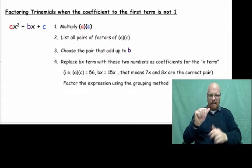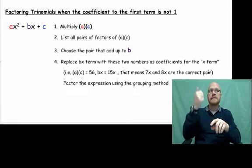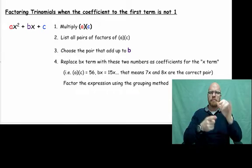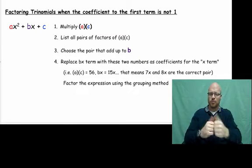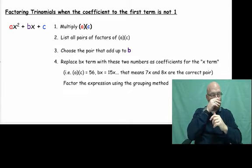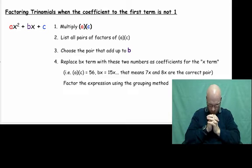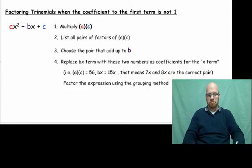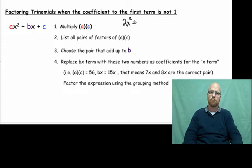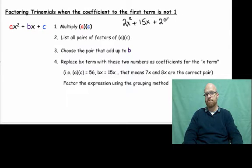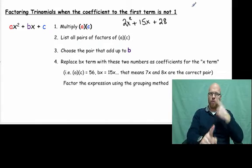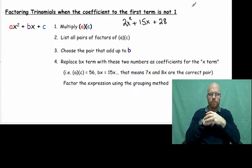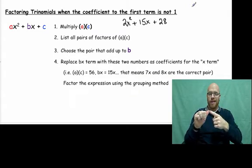You might say, what does a not equal to one mean? Well, a can be four, or sixteen, or seven — any number that's not one. That presents a challenge. We have an example here: 2x squared plus 15x plus 28. We'll use this to go through the process. Now a doesn't equal one — it equals two.